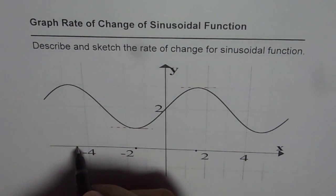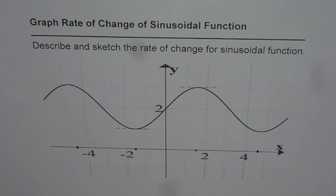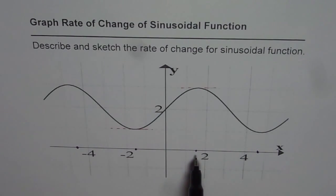Here we will also get a zero, and at this turning point, we will get a zero. At each turning point on a smooth graph, the tangent will be horizontal with a slope of zero. These are the points which will be on the rate of change of this sinusoidal function.